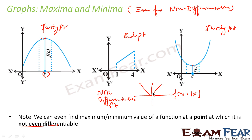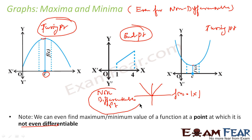So two things to note: one is we can find the maximum and minimum of a function even if it is not differentiable, using a graph. Second, the maximum and minimum can happen at a turning point, end point, or non-differentiable point. We will take more theorems on this, but just logically the observation is that maximum and minimum happens at a turning point, end point, or at a non-differentiable point — because in this case it is non-differentiable and the minima is happening here.